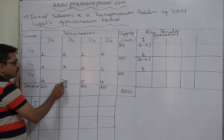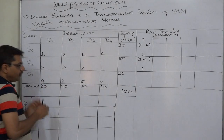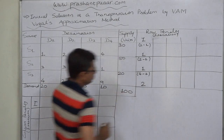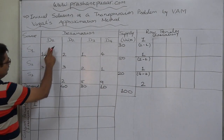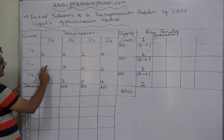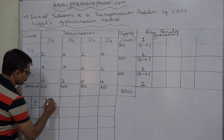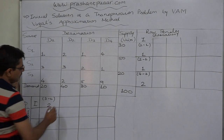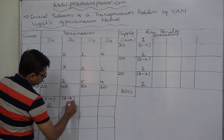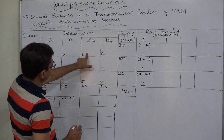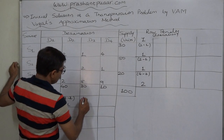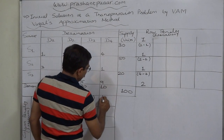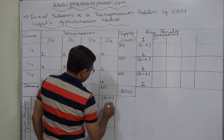For the third row, the least cost is 2 and the immediate higher is 4, so the penalty is 4 minus 2, which equals 2. For column D1, the least cost is 1 and the immediate higher is 3, so the penalty is 3 minus 1, giving 2. For D2, least cost 2 and immediate higher 3, so penalty is 1. For D3, least cost 1 and immediate higher 2, penalty is 1. For D4, least cost 1 and immediate higher 4, giving a penalty of 3.